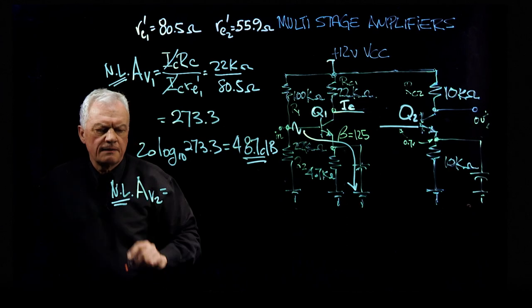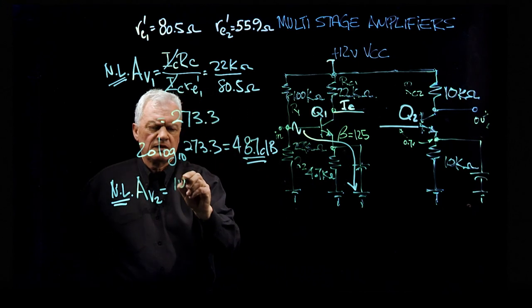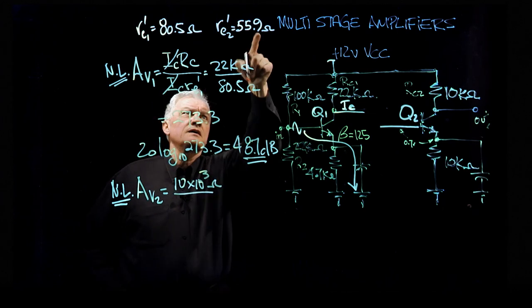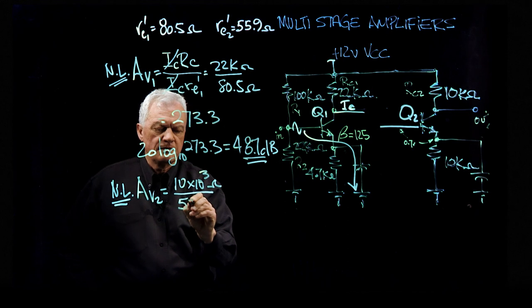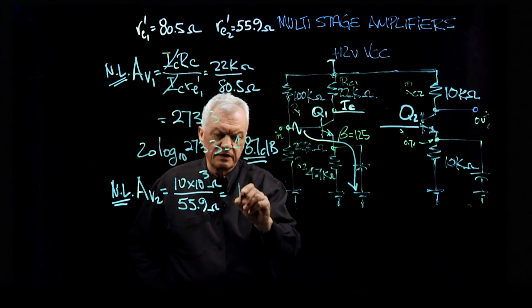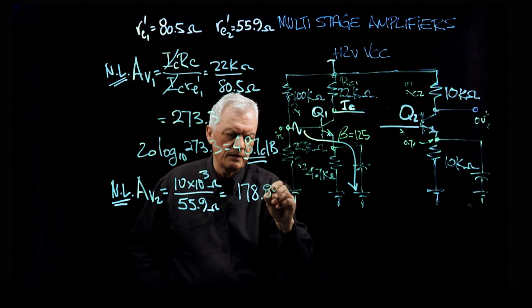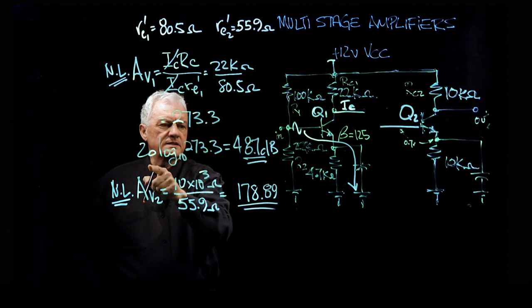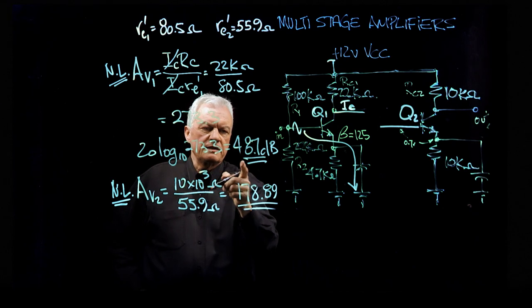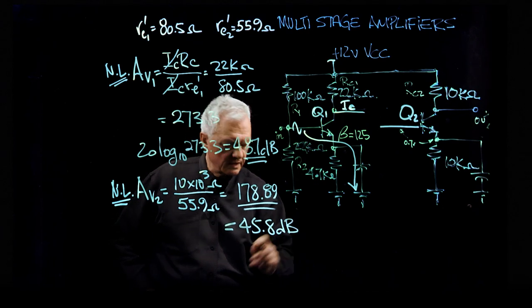So we've got 10K ohms, 10 times 10 to the 3 ohms, and we're dividing that by 55.9 ohms. Ohms will cancel, dimensionless, and you get a number like 178.9. And that, as far as we'd like to see it in dB, is 20 log to the base 10 of 178.89, which is going to be equal to 45.8 decibels.